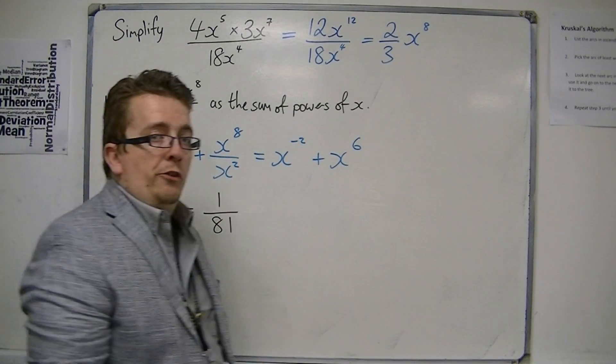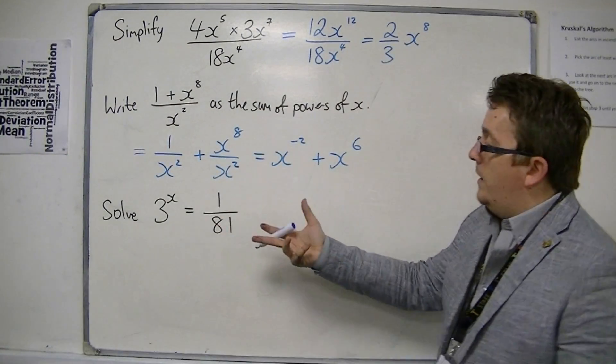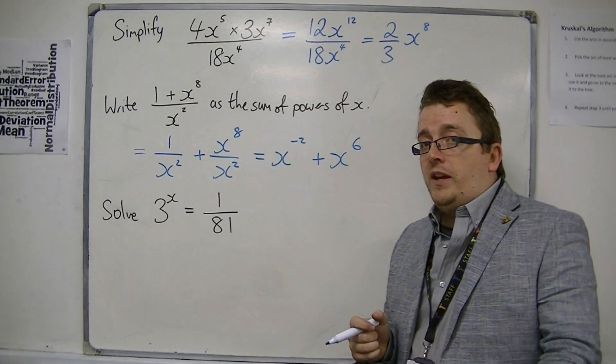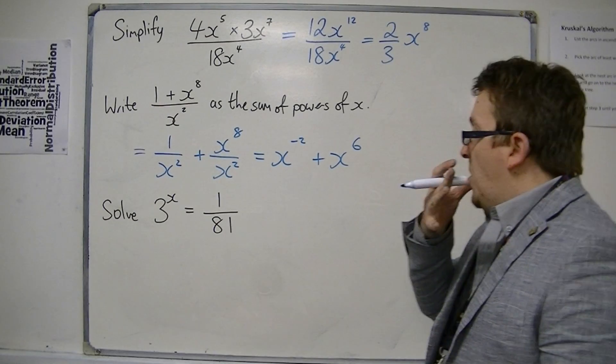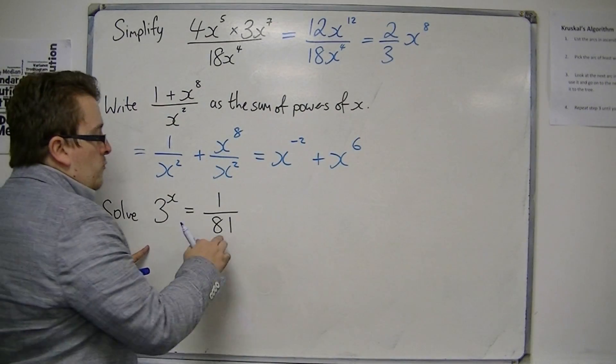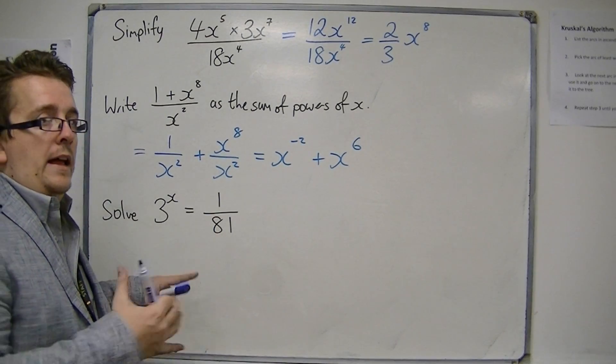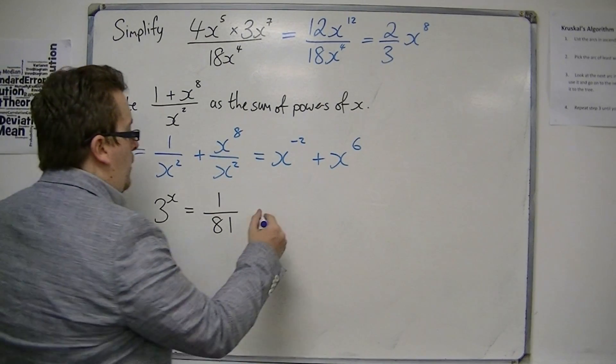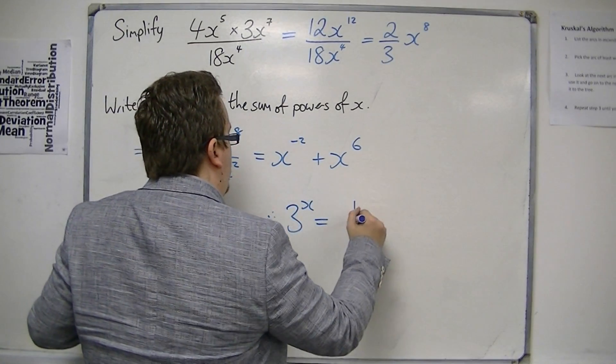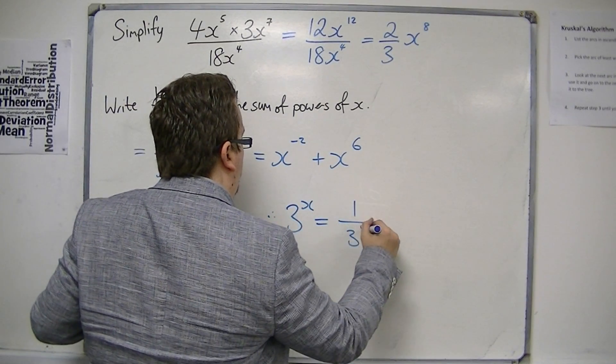And the last thing we're going to do is solve this equation. 3 to the x is equal to 1 over 81. It looks particularly nasty. The first thing to do when we're dealing with these, write 81 as 3 to the something. Now, we know that 81 is 3 to the power of 4.